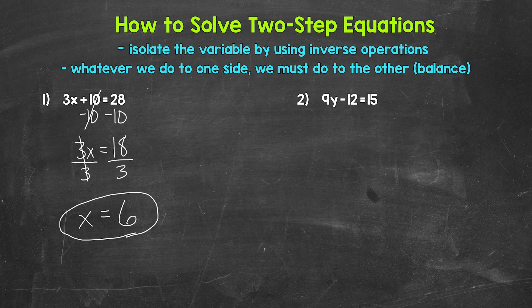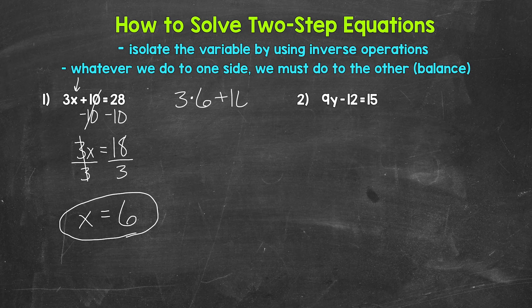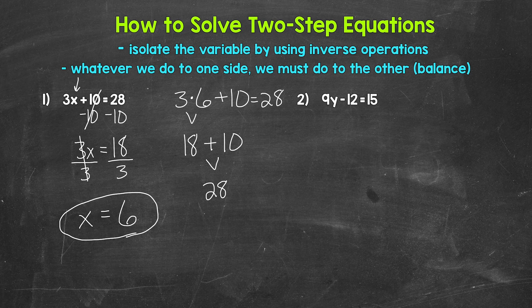Now we can check to see if we are correct by plugging in what we got. So let's plug in six for x and see if it works. Three times six plus 10 equals 28. We multiply first: three times six is 18. So we have 18 plus 10, which is 28. So we are correct — x equals six.